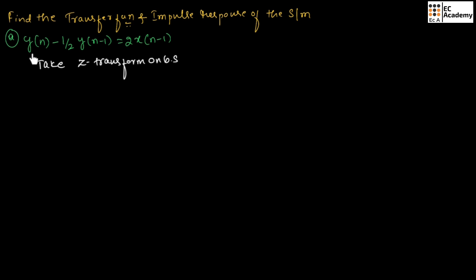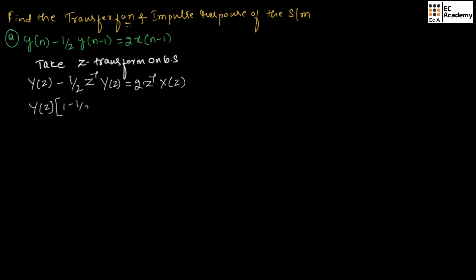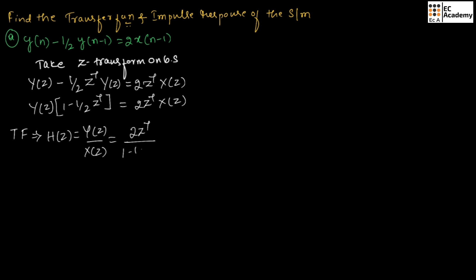We can write the above equation as: Y(z) minus 1/2 z⁻¹ Y(z) equals 2 z⁻¹ X(z). Now, from this equation, let us take Y(z) as common. Therefore, we can write Y(z) times (1 minus 1/2 z⁻¹) equals 2 z⁻¹ X(z). We know the transfer function is given as H(z) = Y(z) / X(z), so we can write this as 2z⁻¹ divided by (1 minus 1/2 z⁻¹).